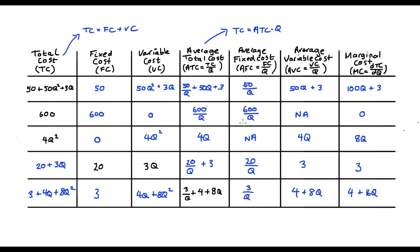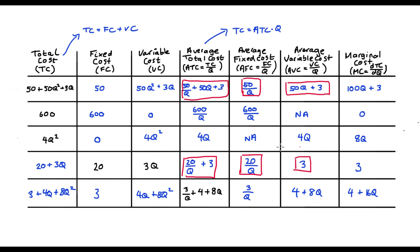There are some other patterns here worth noting. Average total cost is always the sum of average fixed cost and average variable cost. We can see this from any of our examples — in the first example we have 50/Q and 50Q + 3; in the fourth example we have 20/Q and 3. This follows from the fact that total cost equals fixed cost plus variable cost, so average total cost is just average fixed cost plus average variable cost. We can also multiply average fixed cost and average variable cost each by Q to find our fixed cost and variable costs, respectively.